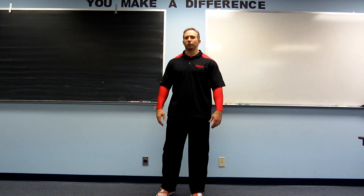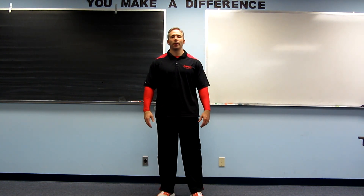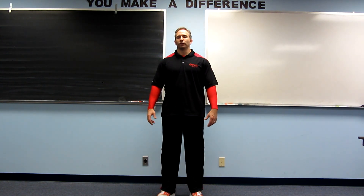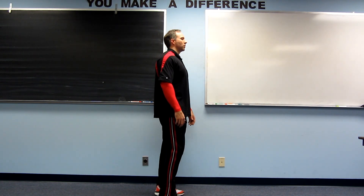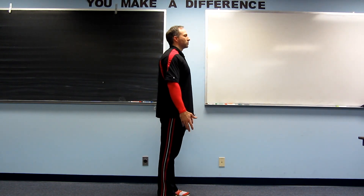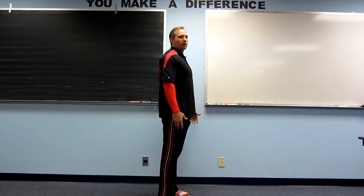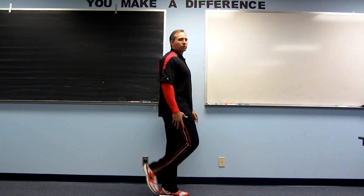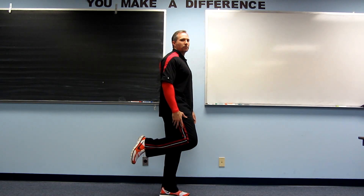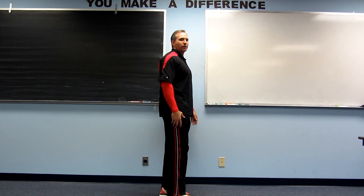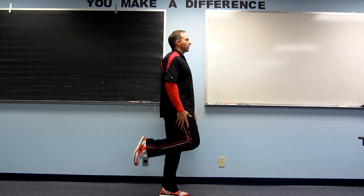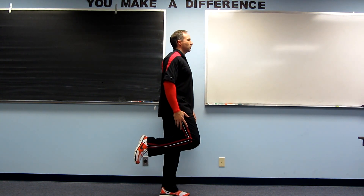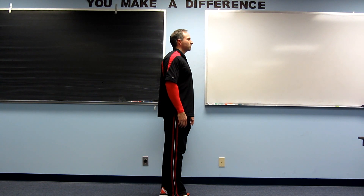Your knee is similar to your elbow in that it only does a few movements. The knee starts in anatomical position, so it's extended. The knee can produce knee flexion — bending — and knee extension — straightening.